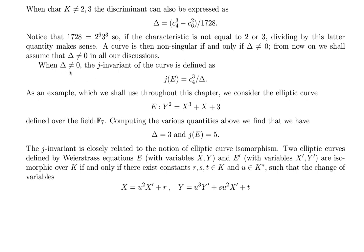When the discriminant is non-zero, delta is not zero, the j-invariant of the curve is defined as j(E) equals c_4^3 divided by delta, divided by the discriminant. As an example which we shall use throughout this chapter, we consider the elliptic curve E such that y^2 equals x^3 + x + 3 defined over the field F_7. Computing the various quantities above we find that we have delta equals 3 and j(E) equals 5.